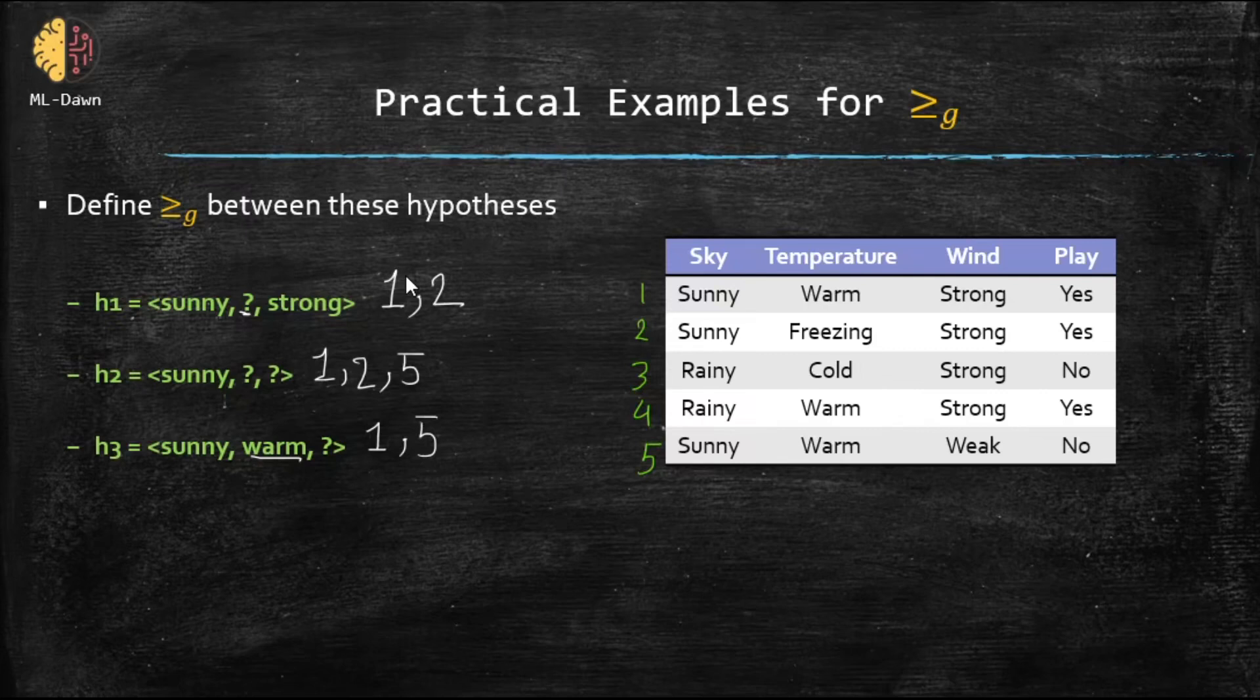What can we say here? We can definitely say that h2 is more general than or equal to h1. That's for sure, because all the examples that can satisfy hypothesis number one, they can also satisfy h2, right? What about h2 and h3? That's right, h2 is again more general than or equal to h3. Very good.